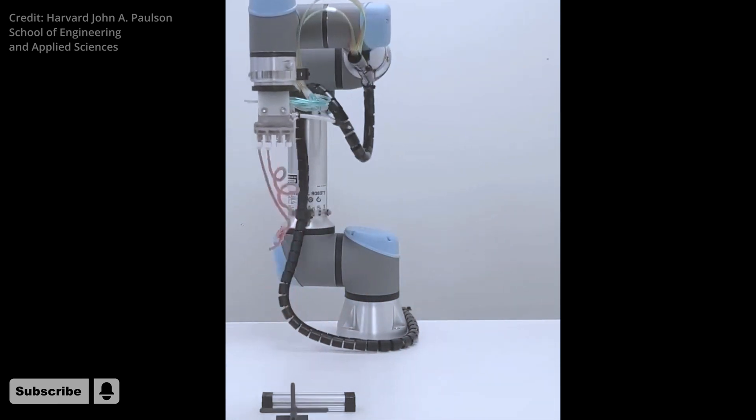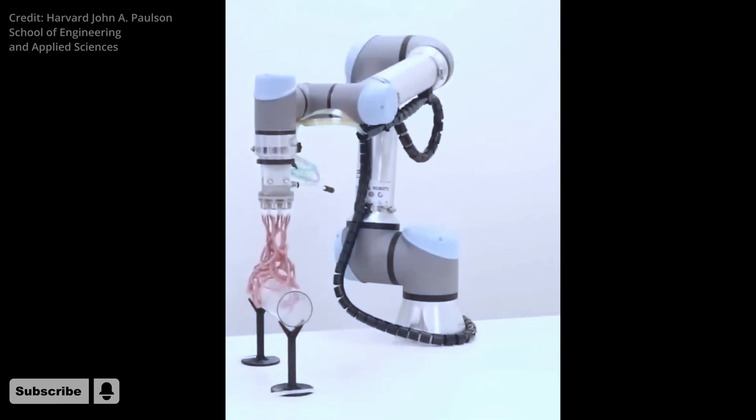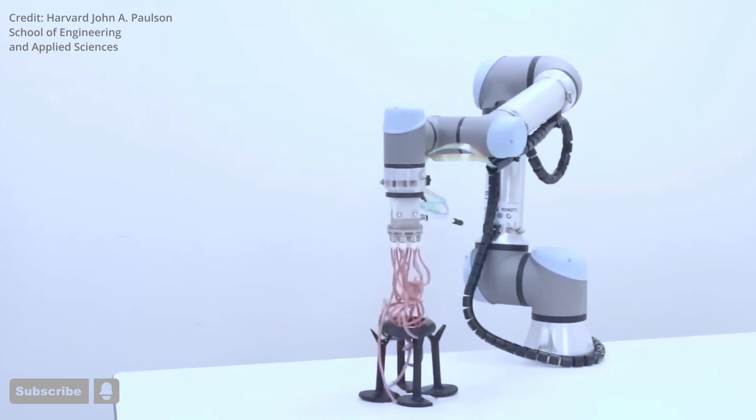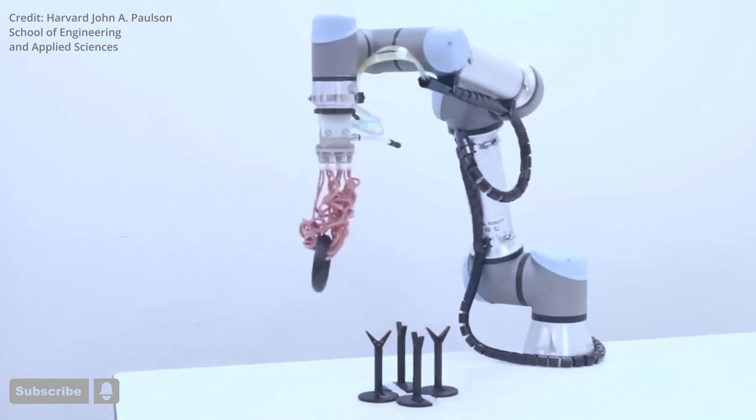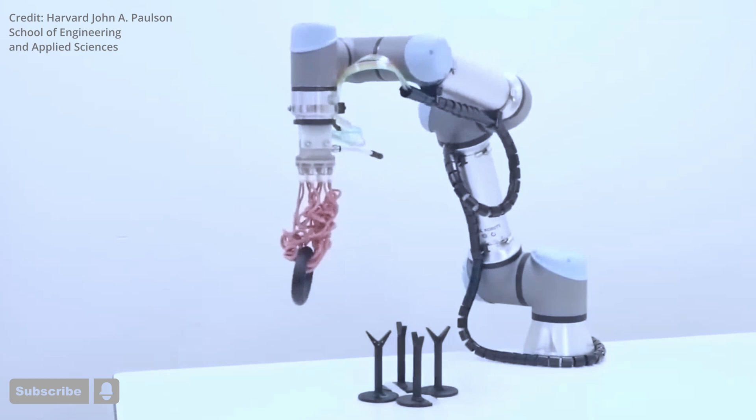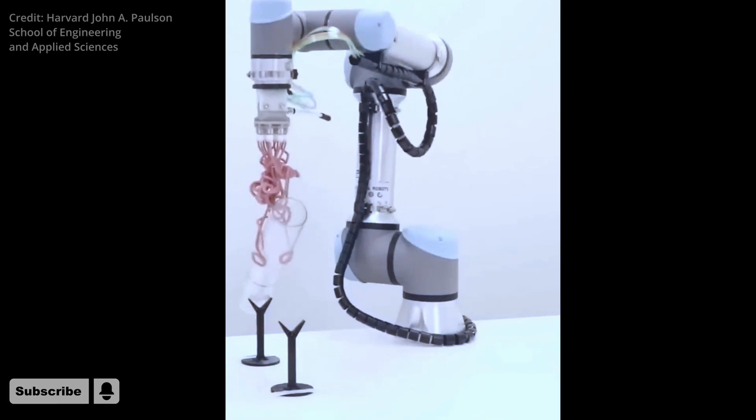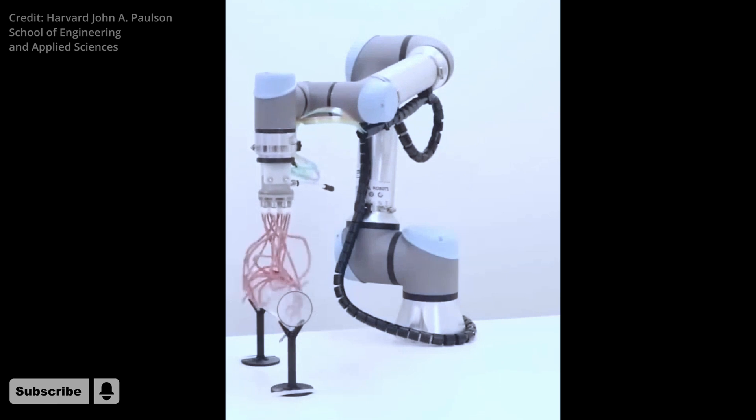The robotics researchers recently submitted a paper describing their findings to the Proceedings of the National Academy of Sciences journal. The robot's delightfully straightforward design inflates its tentacle robot arms to activate its grip. It's made to entangle things without hurting them.